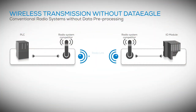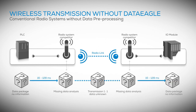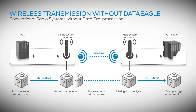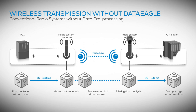With conventional radio systems, data packets are transmitted one-to-one. For this, the data update rate in the controller must be changed. And what's the result? With high data volumes, the radio link is quickly overloaded.